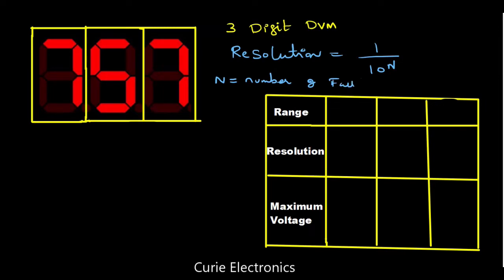That means if you take a three and a half digit display or DVM, you are going to get the same resolution based on the number of full digits. Here we have three full digits, so the resolution equals 1 upon 10 to the power 3, which equals 0.001. So 0.001 is the resolution.